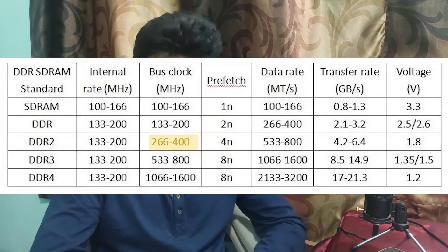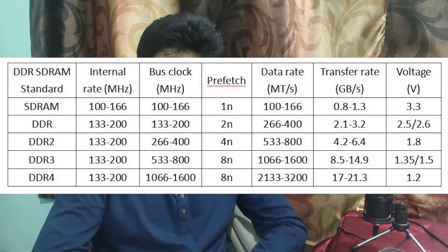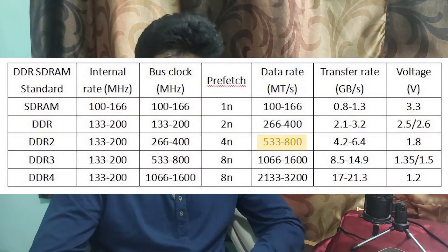For DDR2, the Bus Clock is 266 MHz to 400 MHz. The transfer rate, using double data rate, is 400 MHz to 800 MHz. The operating voltage for DDR2 is 2.5V or 2.6V.